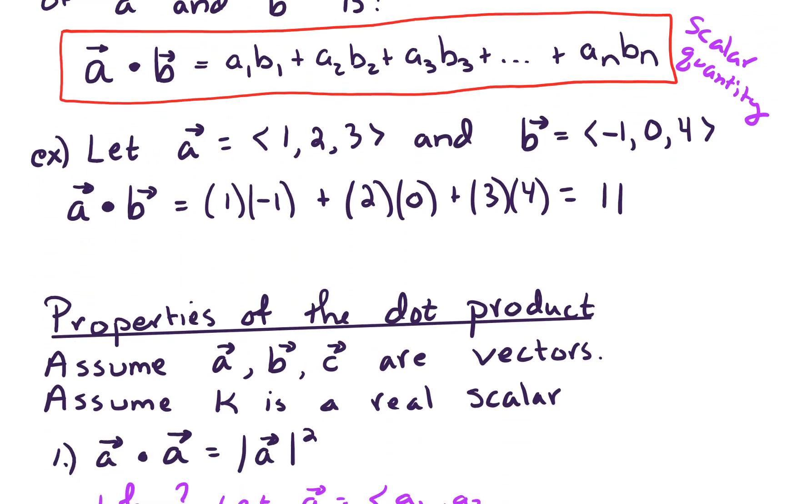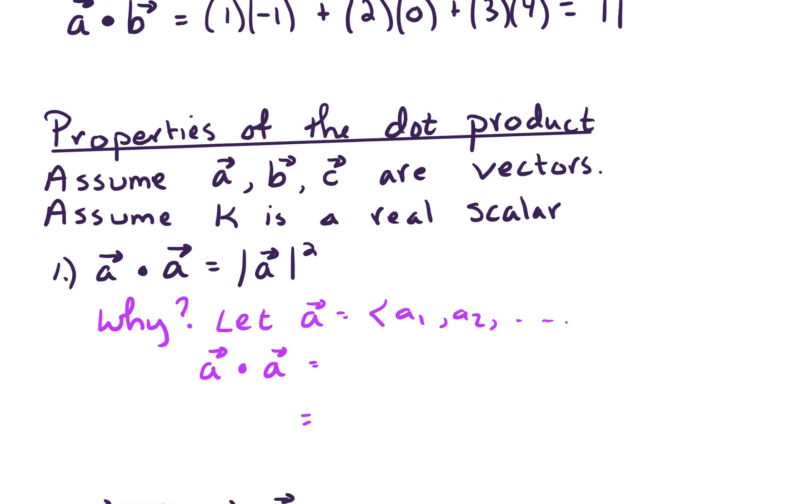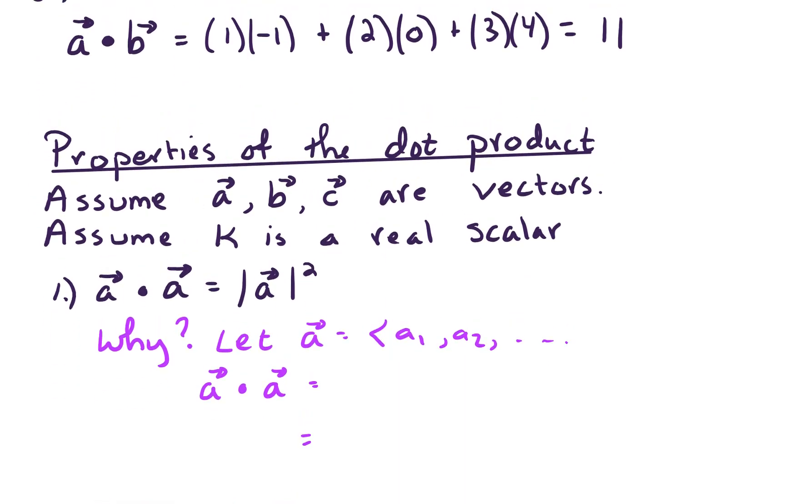Okay, let's take a look at some of the properties of the dot product. We'll begin with two assumptions. We'll assume that a, b, and c are vectors, and assume that k is a real scalar.